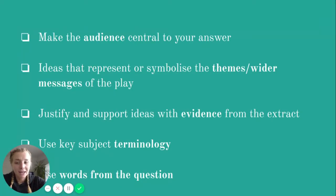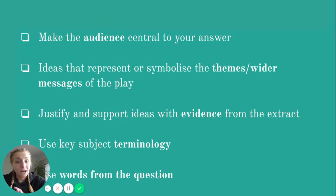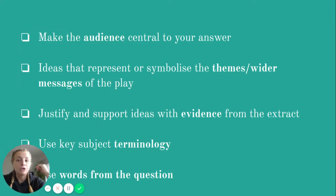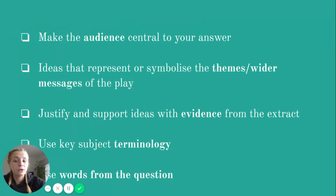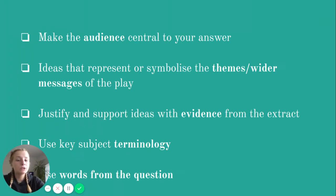Here are the key elements of answering a 14 marker question. You need to make the audience central to your answer — you're always, always, always, when you're writing about drama, talking about how the audience will react, what your intention is, and how you want the audience to respond. Your ideas need to represent or symbolise the themes and the wider messages of the play. So when you're thinking about something like costume, you're thinking about how you can use costume to demonstrate status, class or power. You want to be justifying and supporting ideas with evidence from the extract, which means using quotes. You're using your key subject terminology and using words from the question — and those are the five things you're really focused on when answering a 14 marker.